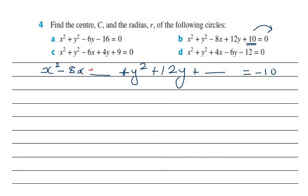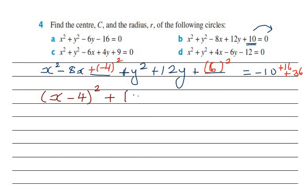Completing the square: half of negative 8 is negative 4, so I write plus (-4)² = 16 on the left, and add 16 to the right side. Then half of 12 is 6, so I write plus 6² = 36 on the left, and add 36 to the right side as well.